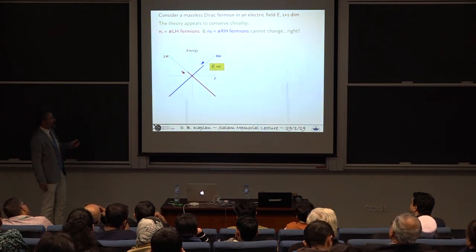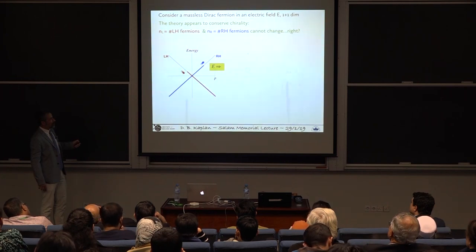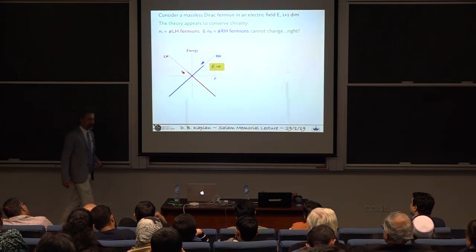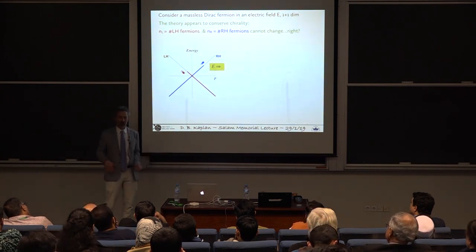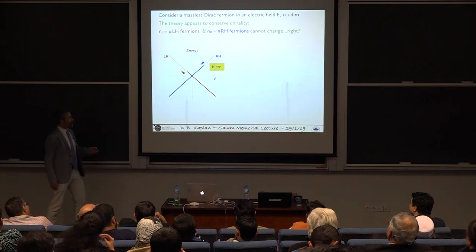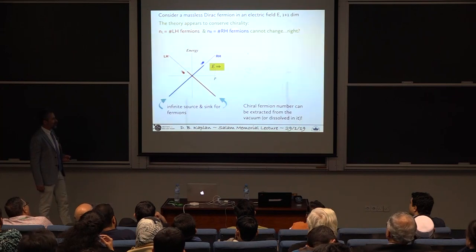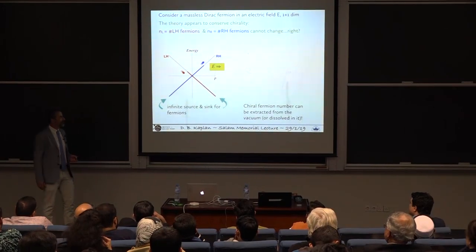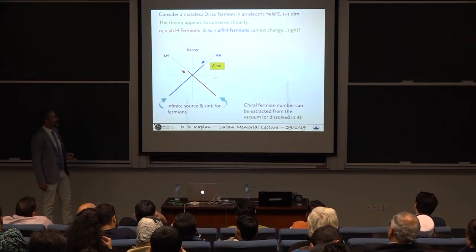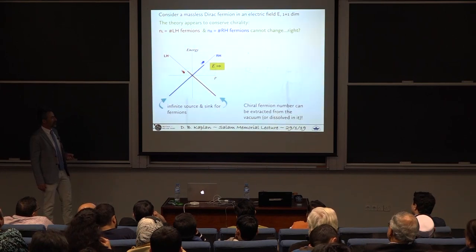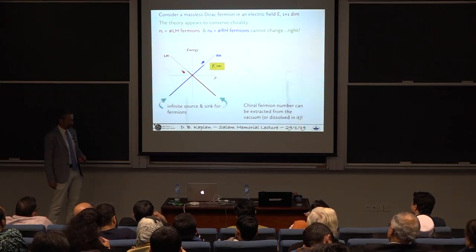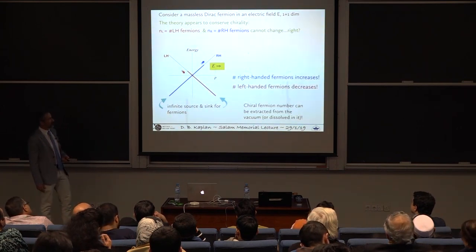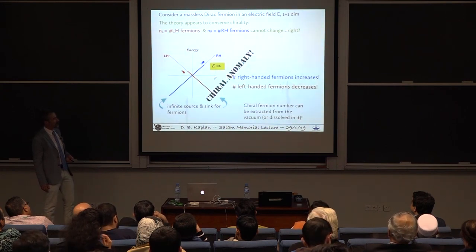And they keep coming out of the vacuum, out of nowhere. And the more I run this electric field, the more I get. Meanwhile, these particles, these left-handed particles, are also getting more positive momentum, which means they're going down their line here. And I'm getting fewer and fewer as they're disappearing into the vacuum. So you have this very strange thing where right-handed particles are surging out of the vacuum. The left-handed ones are disappearing into it. So the number of left-handed particles, the number of right-handed particles is not being conserved because I have this infinite source for fermions, which looks like a Hilbert Hotel for electrons. So you can pull chiral fermion number out of the vacuum, or you can dissolve it in the vacuum. This was a real shock when people discovered this in the late 60s.